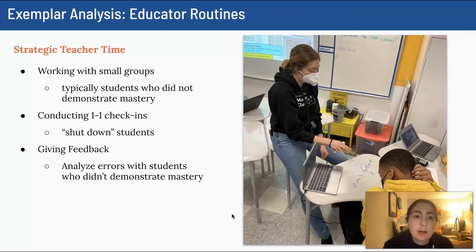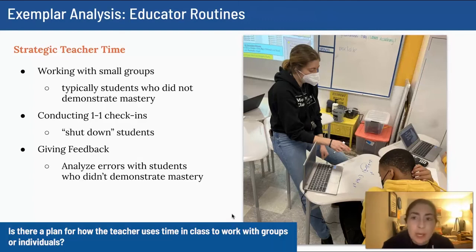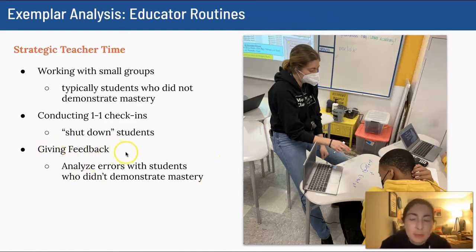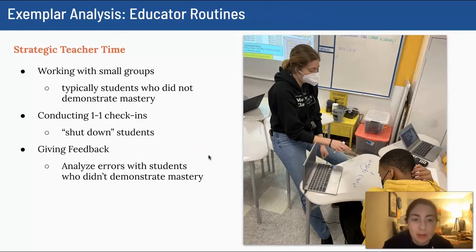Once students are working independently or in small groups, I first go around to my highest-priority check-ins — students who did not yet demonstrate mastery on a mastery check, students who have fallen significantly behind, or students who have been out and just returned. When I meet with students about revisions, we analyze their errors together. On the fly, I might write a similar problem on their desk for them to complete in whiteboard marker to check understanding. If they demonstrate mastery informally, I'll reopen the mastery check on Canvas for them to try again.